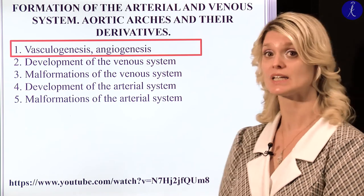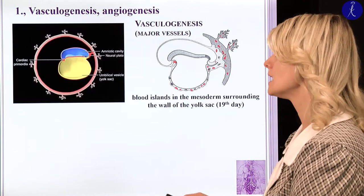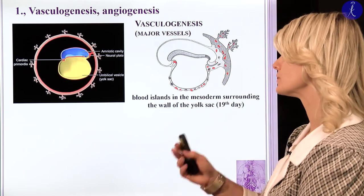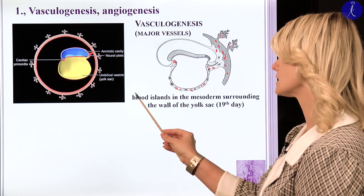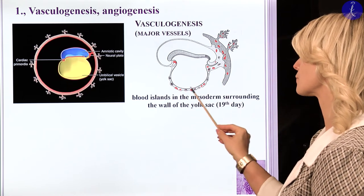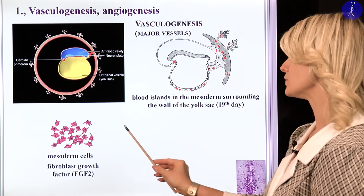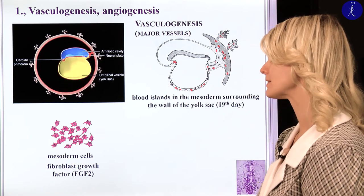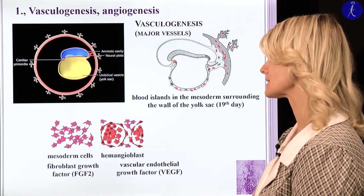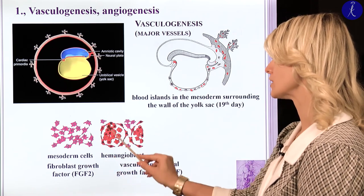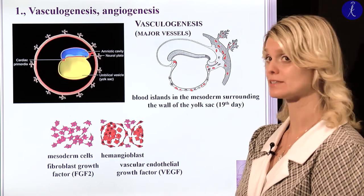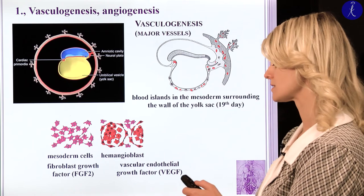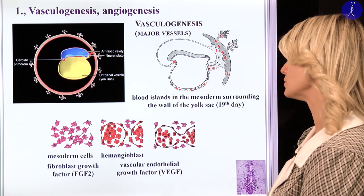Let's see the first point: vasculogenesis and angiogenesis. Here you can see the blood islands, which are located in the mesoderm surrounding the wall of the yolk sac. The fibroblast growth factor can help in the differentiation of these mesoderm cells. From these cells we will develop the hemangioblasts. Another important factor is the vascular endothelial growth factor, which is also really important in the development of the vessels. From the hemangioblasts we will develop two different cell types.